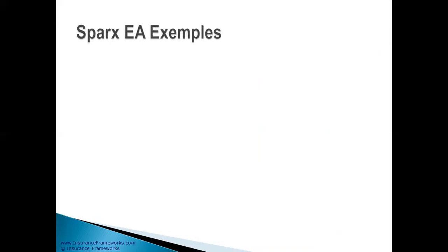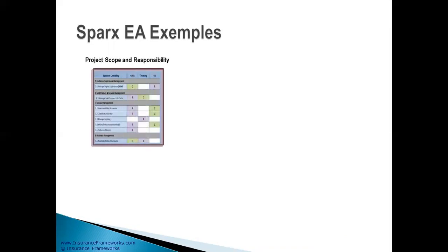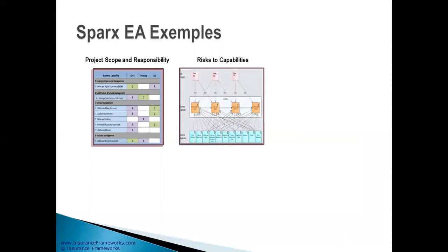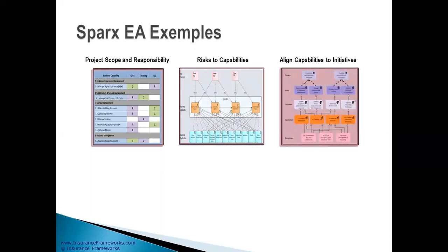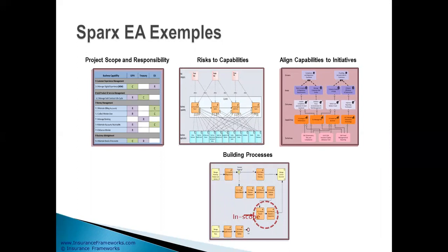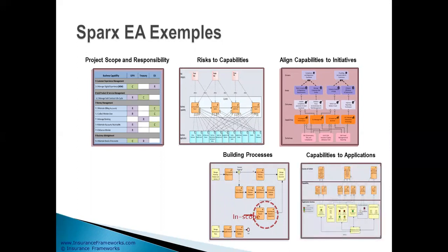Here are some examples of what clients are doing with Sparx Enterprise Architect and Panorama 360: project scope and responsibility mapping them against each other, mapping the risks to capabilities, aligning the business capabilities to projects, building the processes and capabilities to application, and that's only a few of the examples that exist.